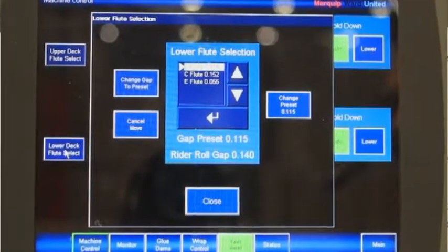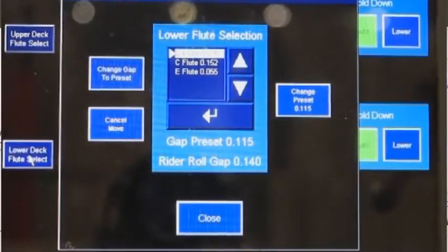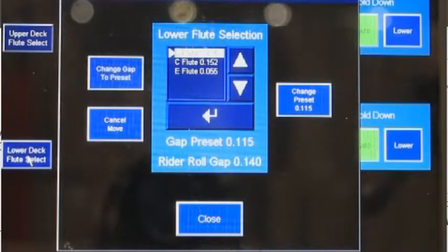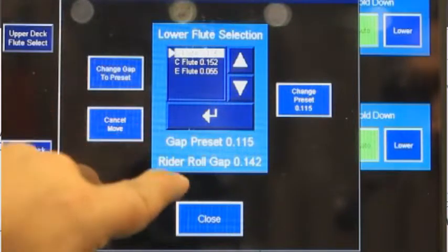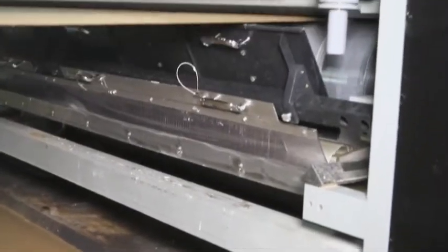When set properly, rata rolls do a superior job than alternative systems. The historical problem with rata rolls has been to properly adjust it for various flutes and paperweights. The gap must be set accurately to avoid crush or improper starch application.